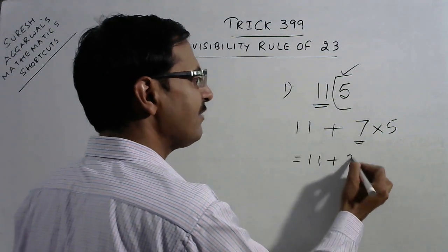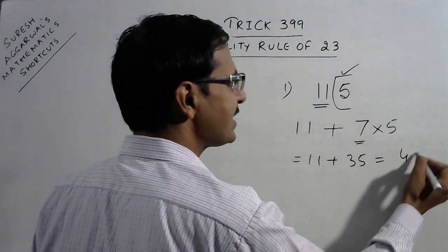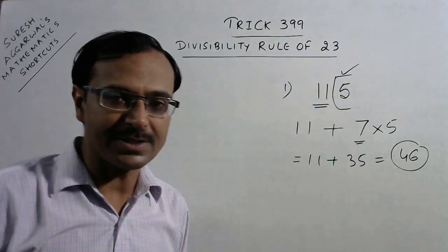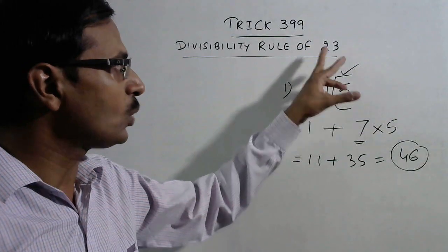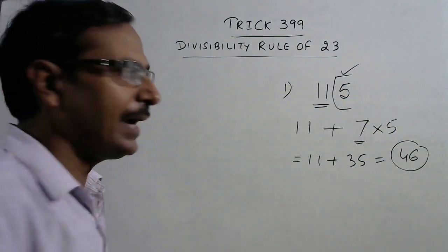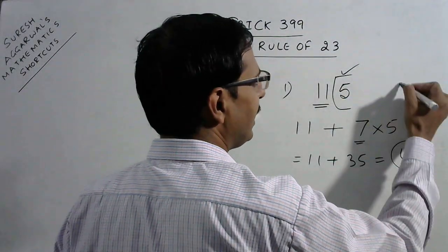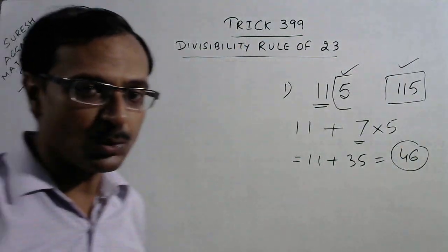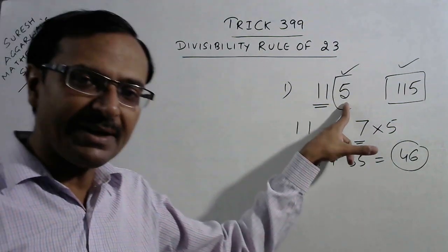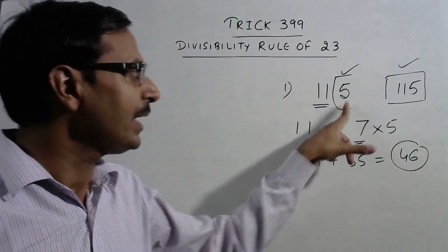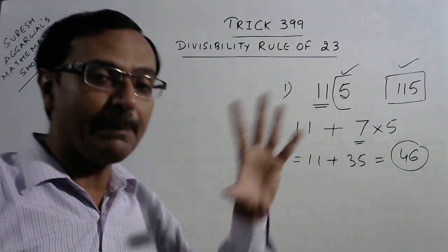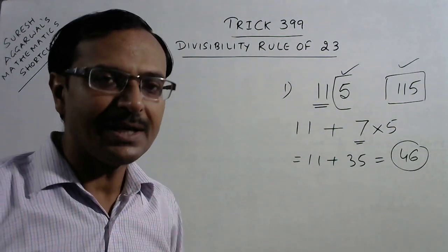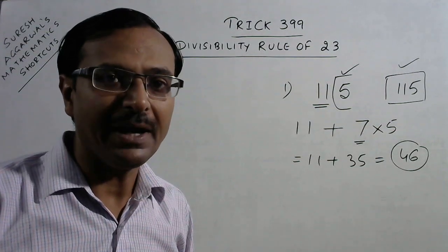So 11 plus 35, that becomes 46, and now you can see 23 into 2 is 46. 46 is clearly divisible by 23. So the entire number 115 is divisible by 23. Again, what is the rule? Take 7 times the unit digit and add it to the remaining number. If the obtained number is divisible by 23, then the entire number is divisible by 23.